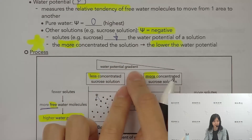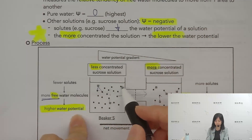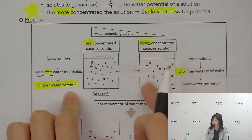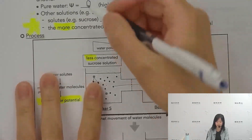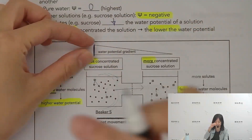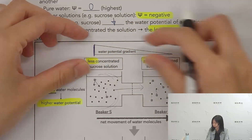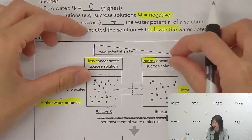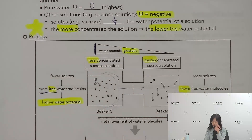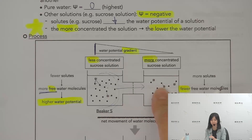Do you know what a gradient is? A gradient is a slope. Here the water potential is higher, and here the water potential is lower. The water potential gradient refers to the difference in water potential between two places — the ratio of that difference.